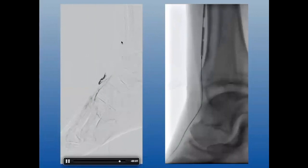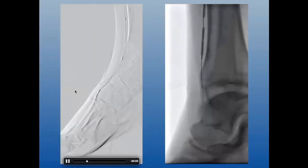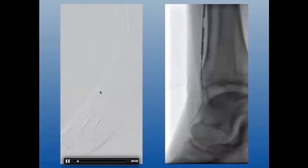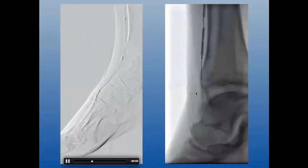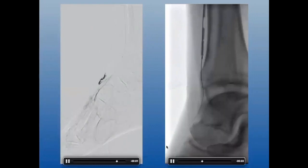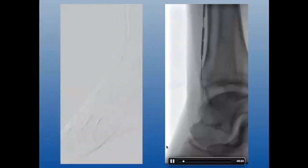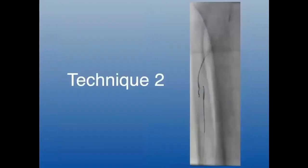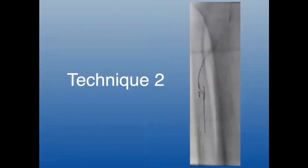I then reversed my access — pulled the wire back, put a catheter from above, and injected. The pedal access site is normal; you can just put your finger on it to achieve hemostasis if you want. I advanced a wire down and ultimately did balloon angioplasty.